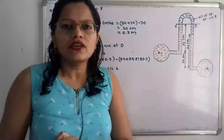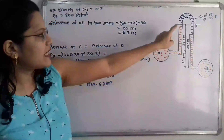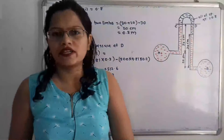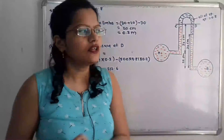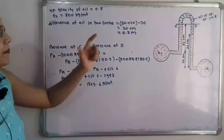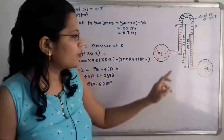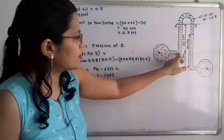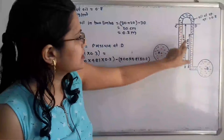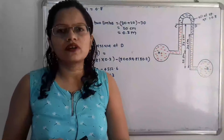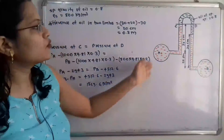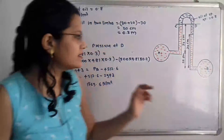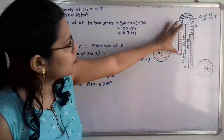We now consider the datum line — C to D is the datum line. Observing the diagram, the pressure below point C is equal to the pressure below point D. To define the pressure below point C: here is the pipe having center A, and this is the water having height equal to 30 cm. Since the U-tube is getting inverted, we first take the pressure at point A, that is P_A.